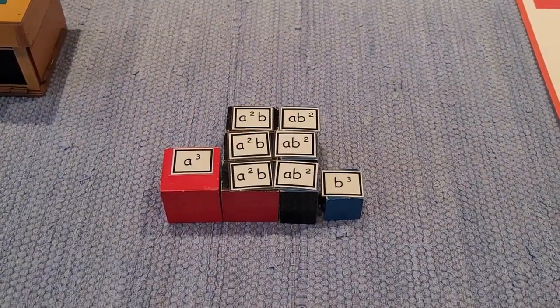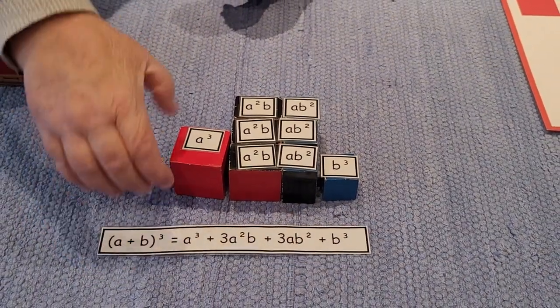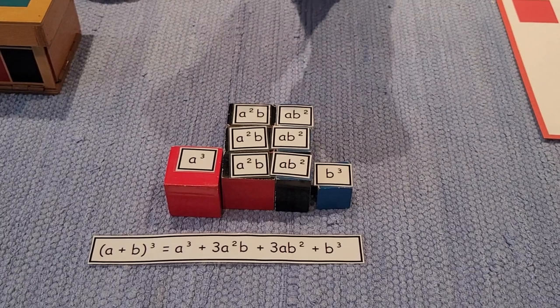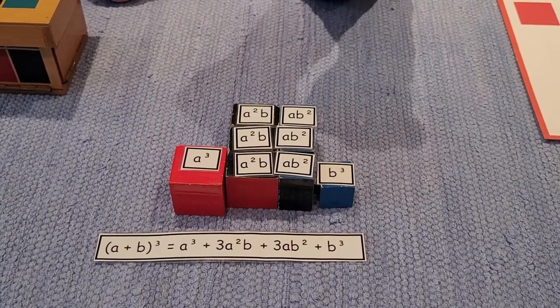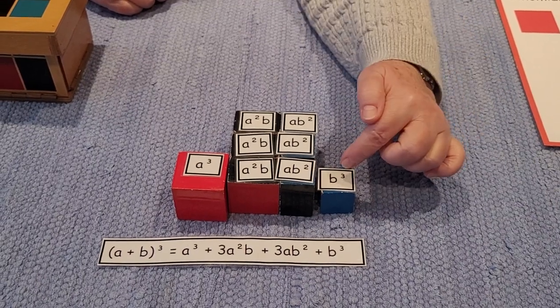Now, to write the formula for the cube, we say A cubed plus three A squared B plus three AB squared plus B cubed.